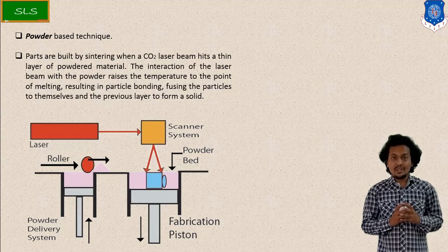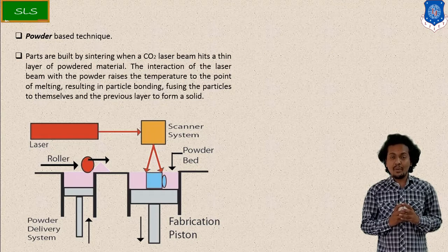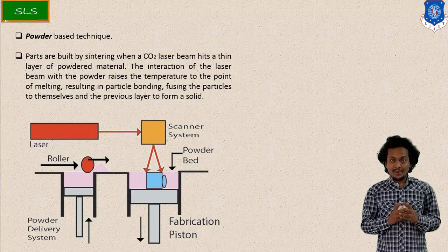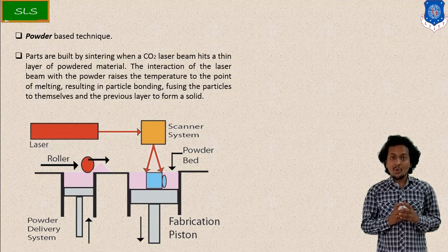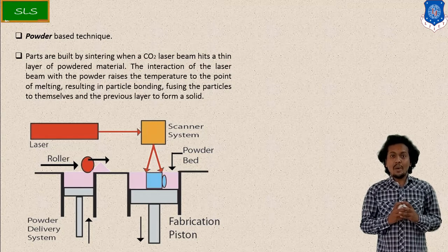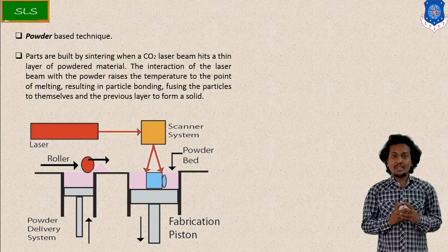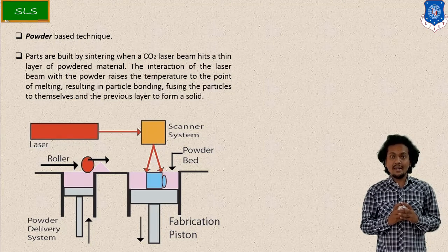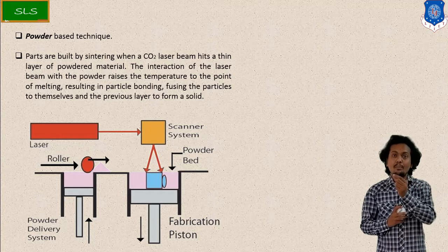I have mentioned the general principle figure for the Selective Laser Sintering process. This process is based on the powder technique, meaning the raw material is in the form of powder. When we convert our 3D CAD model into a .STL file, based on this STL file, the laser will guide according to the part geometry.